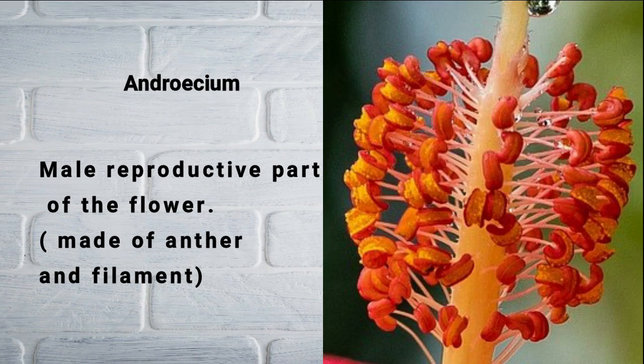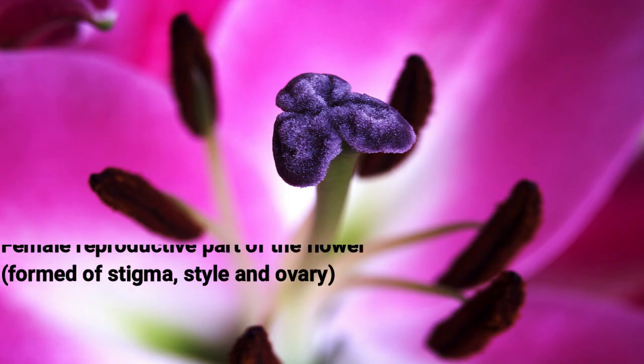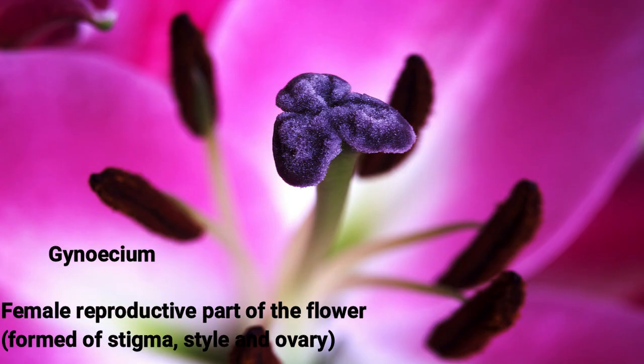The male reproductive part of the flower is the androecium, made of anther and filament — that's all you need to know right now. Then we have the gynoecium, which is the female reproductive part of the plant, which is formed of stigma, style, and ovary. So that's the general idea you have to remember.